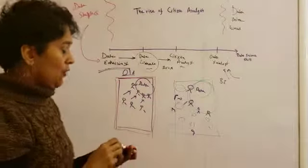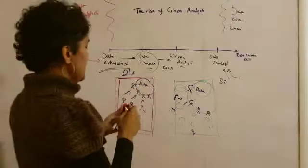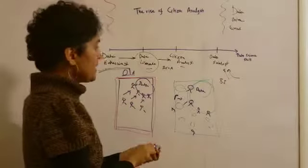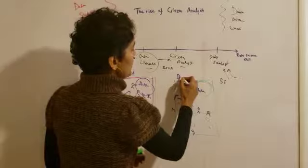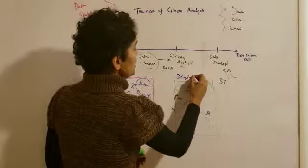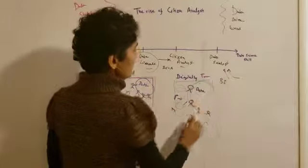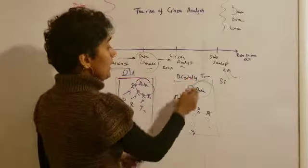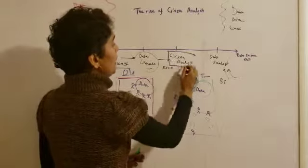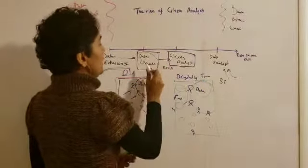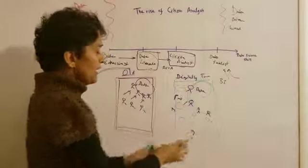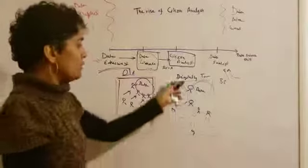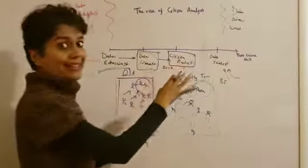So why are we talking about this? Data skeptics can derail your data literacy program before it starts. They need to be, through a properly nurtured program, turned into data enthusiasts for your organization to move. Eventually what you want in a digitally transformed organization, in this new organization, more and more people are going to be falling in the data literate and citizen analyst bucket. People are either data literate or citizen analysts.